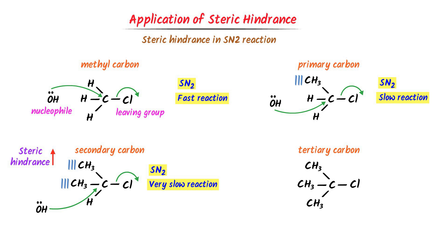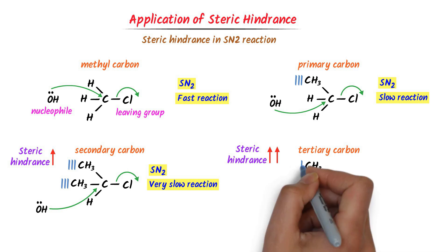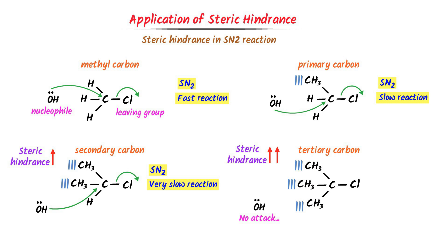Fourthly, in the case of tertiary carbon, there are three methyl groups, due to which there is very high steric hindrance in this molecule. The hydroxide ion cannot attack on this carbon because the central carbon atom is blocked from all sides. Thus, we say that no SN2 reaction is possible in tertiary carbon. It is due to high steric hindrance. Remember that tertiary carbon therefore follows SN1 reaction. Note down this important concept.